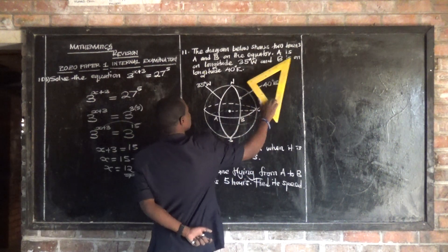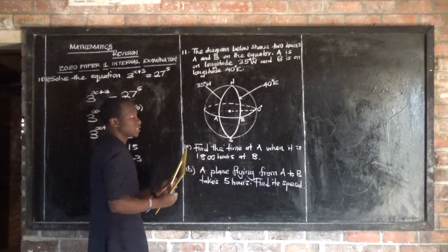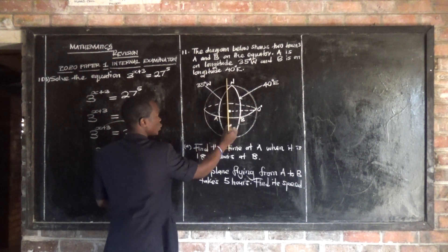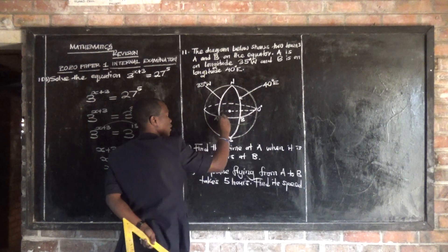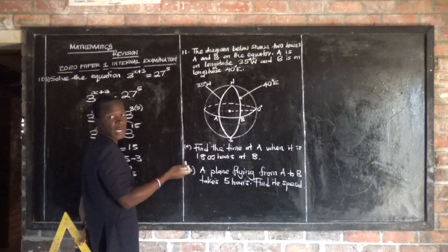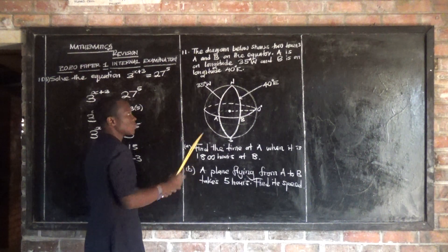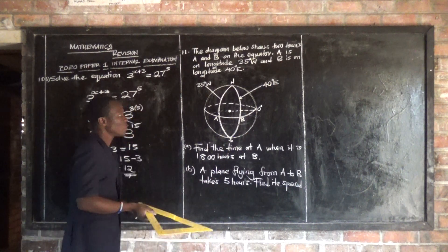A is on the equator at 5 degrees west, this one. A is on the western part. Then B is on this equator at 40 degrees, that is B.